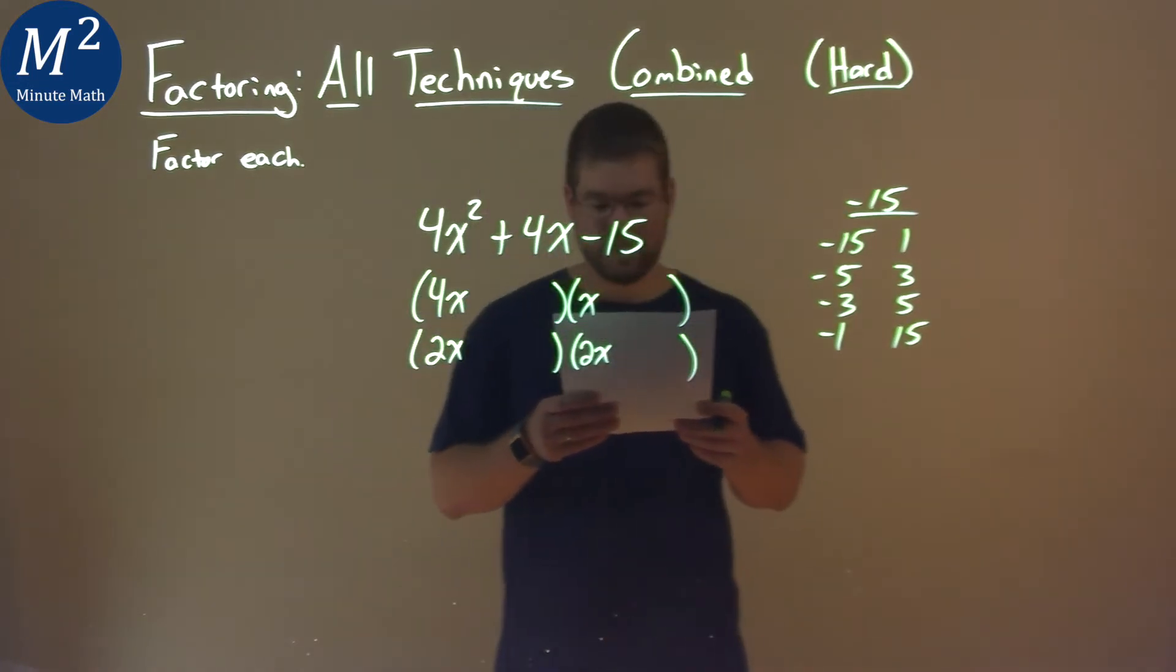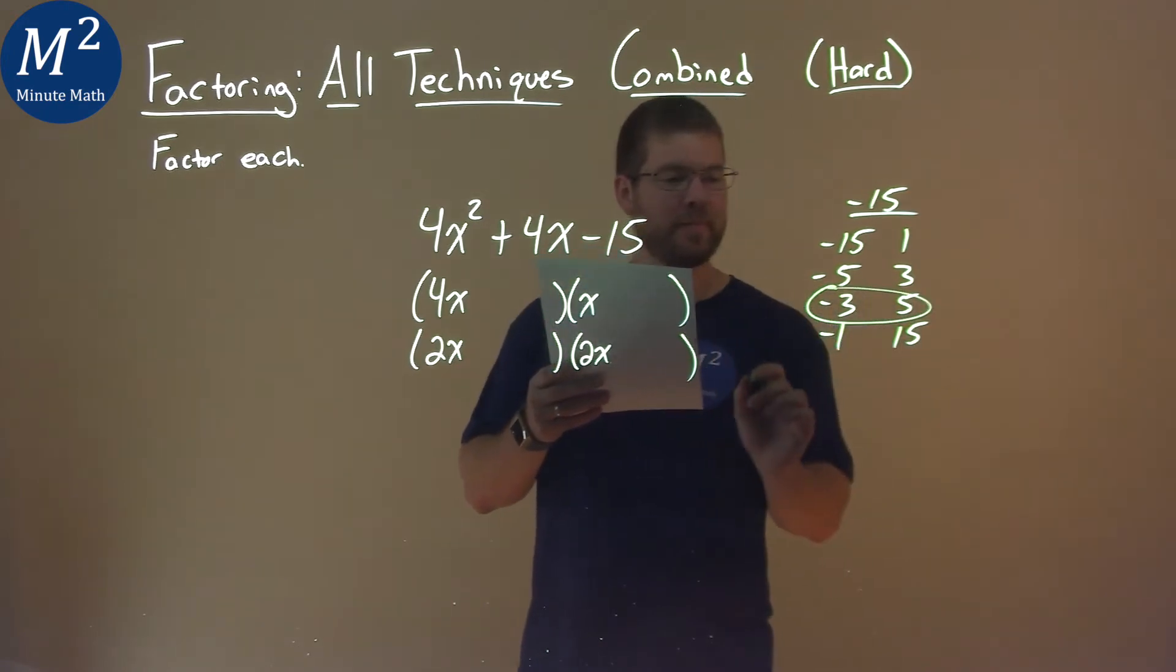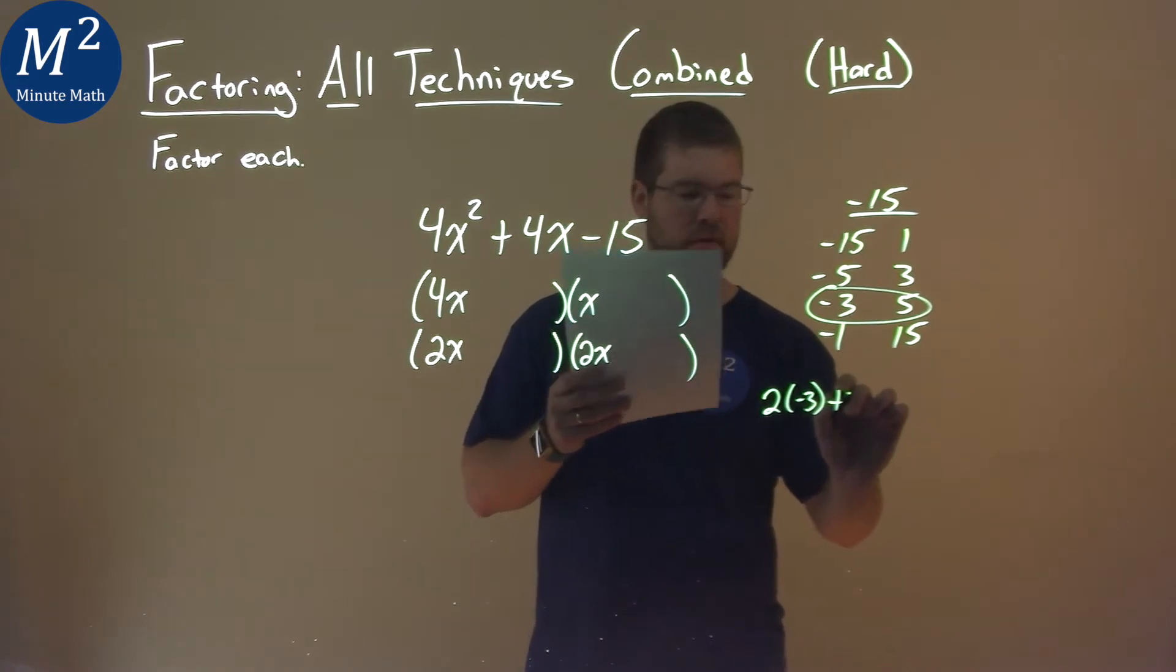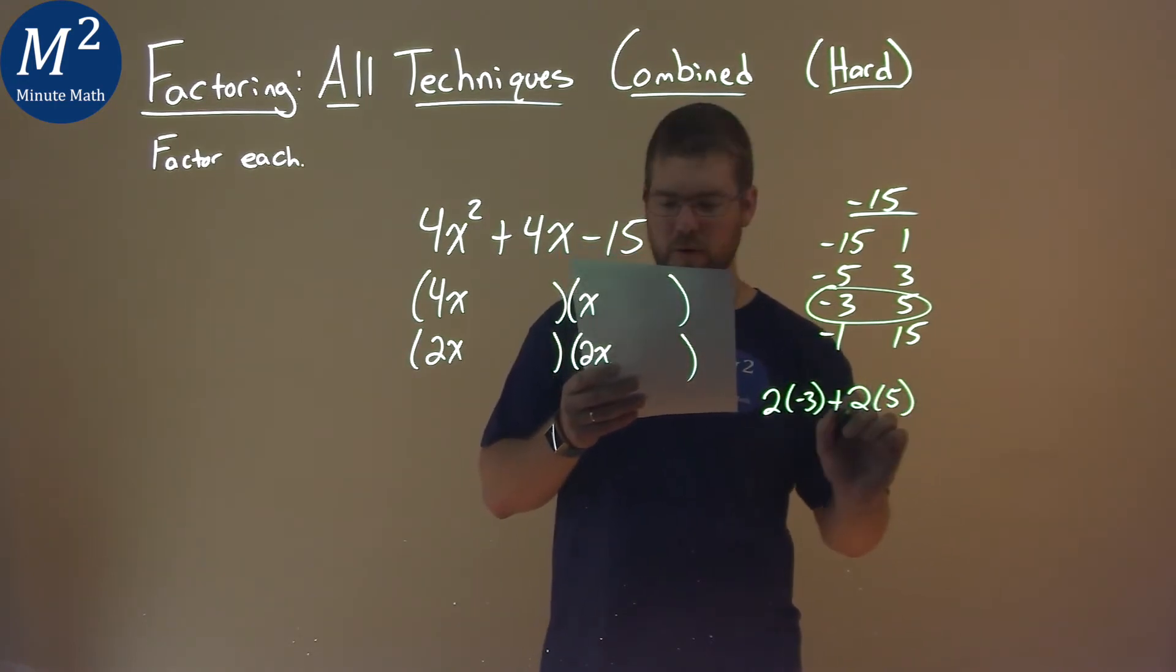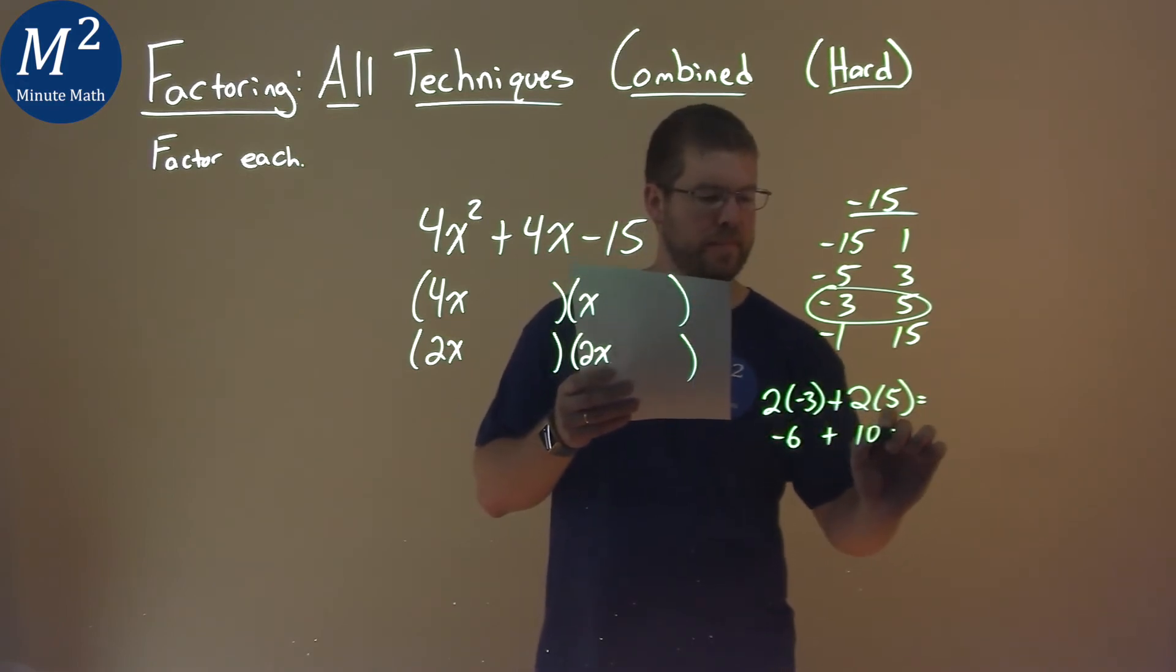Do you figure it out? The negative 3 and positive 5. 2 times the negative 3 plus 2 times positive 5, what does that equal? Well, 2 times negative 3 is negative 6, and 2 times 5 is 10, and that equals positive 4.